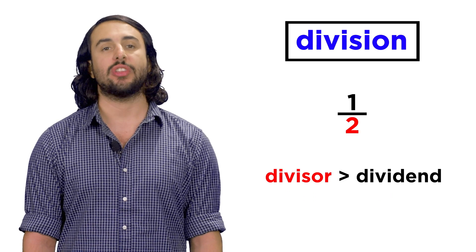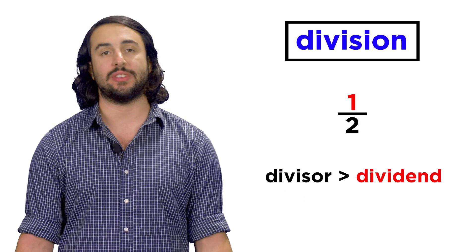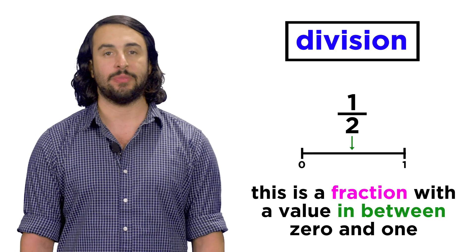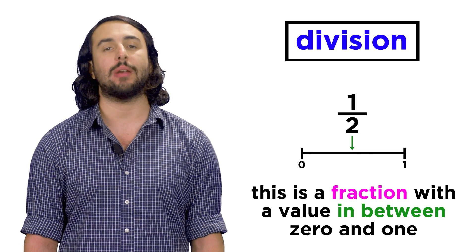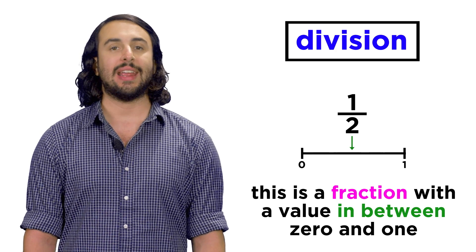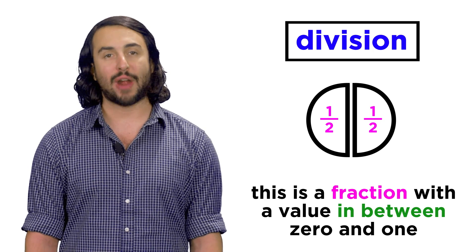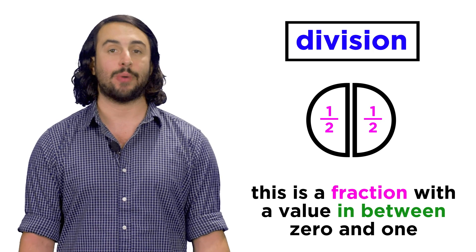But sometimes the divisor will be larger than the dividend, in which case we will get a fraction that has a value somewhere between zero and one. It's a piece of one, or a fraction of one, hence the name, fraction.